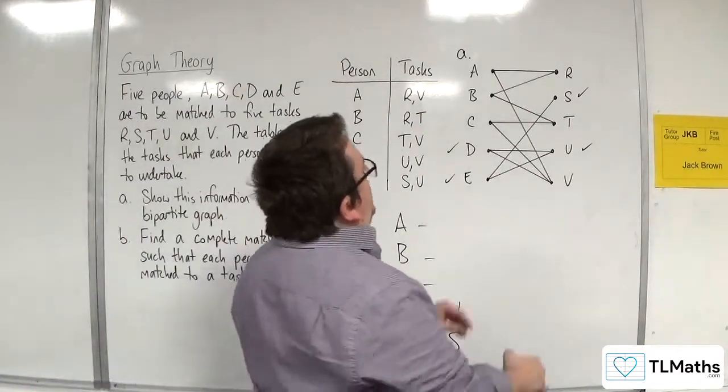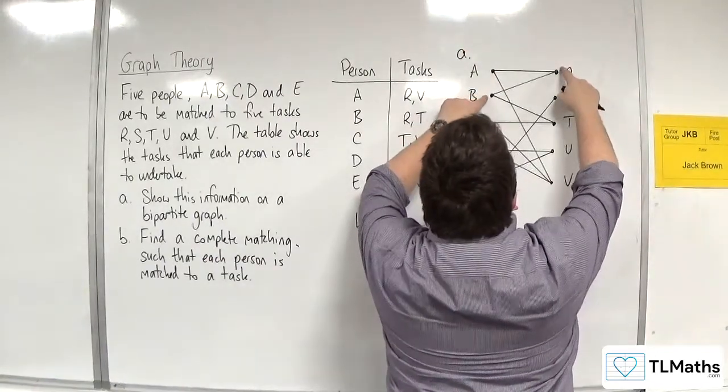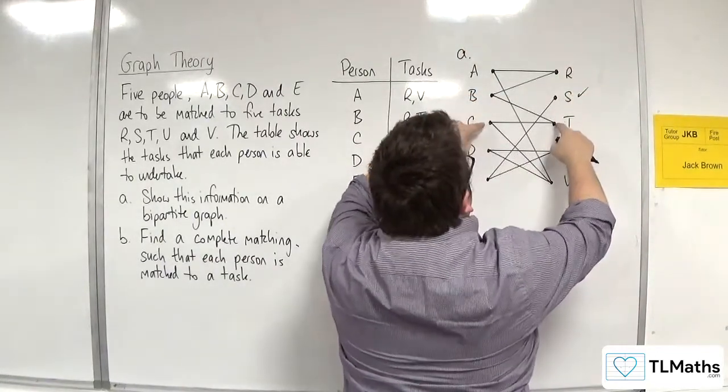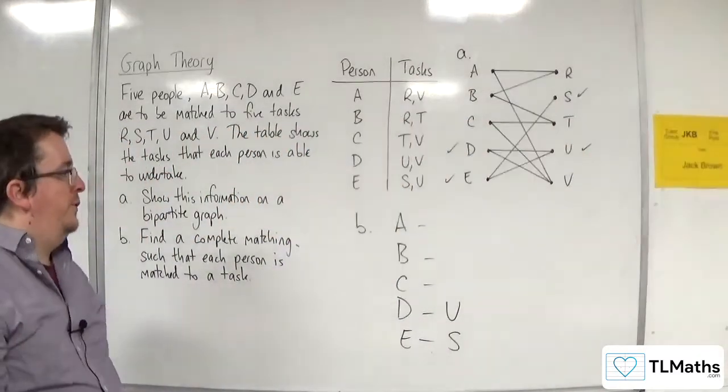If instead we'd connected A with V, then B would have to do R, and T would have to be done by C. So actually there appears to be two possible ways of doing this.